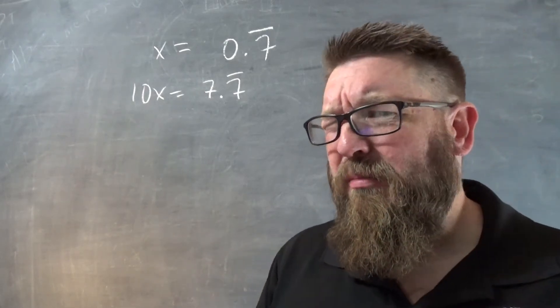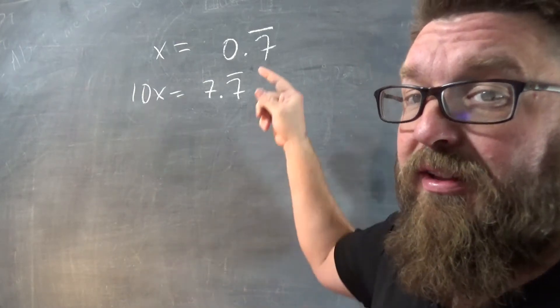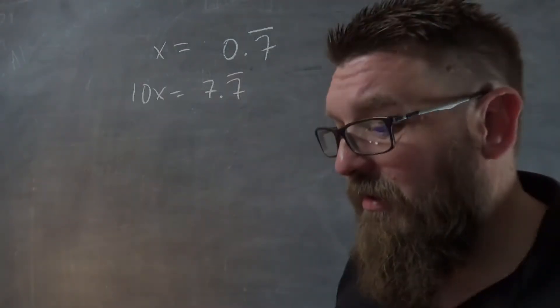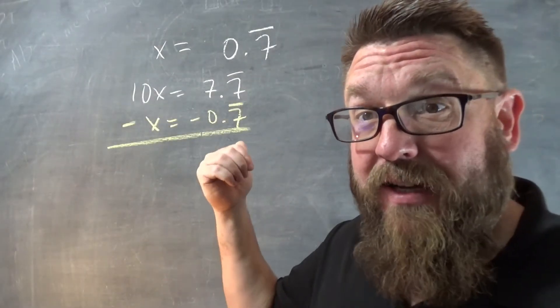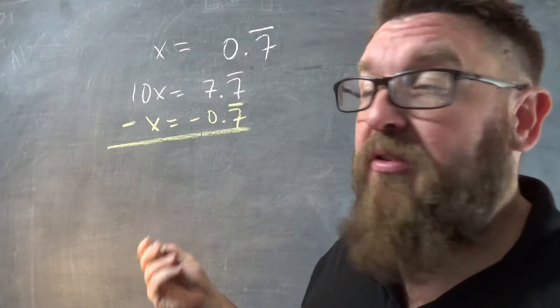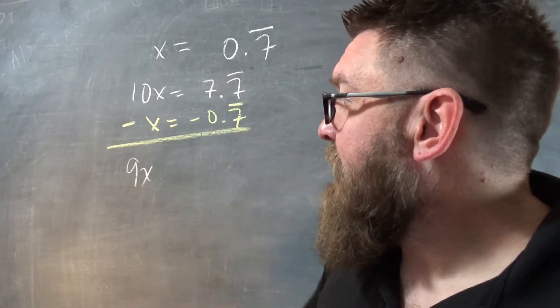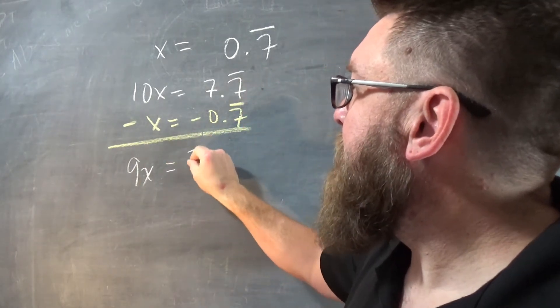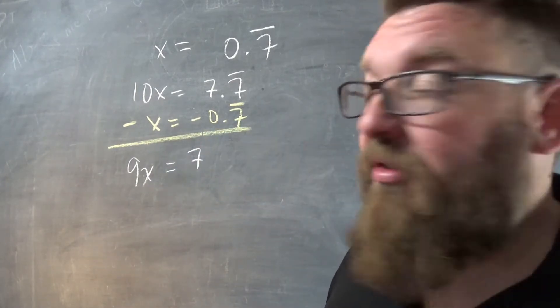This has to do with systems of equations. We'll just go ahead and solve it. What we're going to do is we're going to take this first equation right here, and we're going to subtract it from the second equation right here. So we're going to subtract it like that. Now, 10 minus 1. That's famously known as 9. 7.7 repeating minus 0.7 repeating just 7.